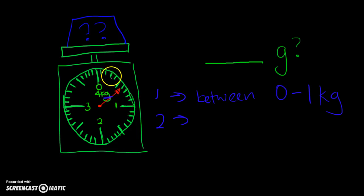So we have 1, 2, 3, 4, 5, 6, 7, 8, 9, 10. So we know that there are 10 lines before you reach 1 kg.